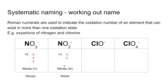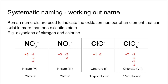For the two chlorine oxyanions: ClO⁻ has one oxygen giving −2, so to leave a −1 charge, chlorine is plus one — this is chlorate(I). For ClO₄⁻, four oxygens give −8; to leave −1, chlorine is plus seven — this is chlorate(VII). The alternative names are hypochlorite and perchlorate, but don't worry too much about those. The exam only requires the systematic name with the Roman numeral.